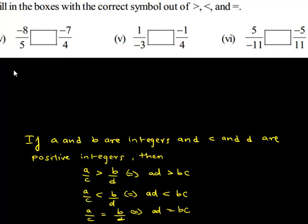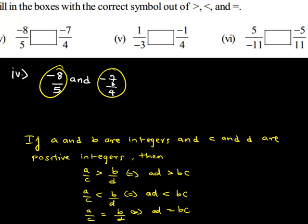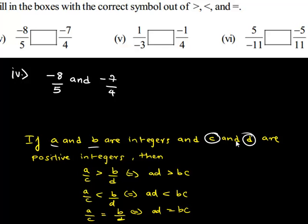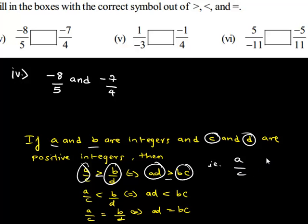The next question we have is negative 8 upon 5 and negative 7 upon 4. These two rational numbers have positive denominators, hence we can compare them using the cross multiplication method. It states: if a and b are integers and c and d are positive integers, then a upon c is greater than b upon d if and only if the product a×d is greater than b×c.